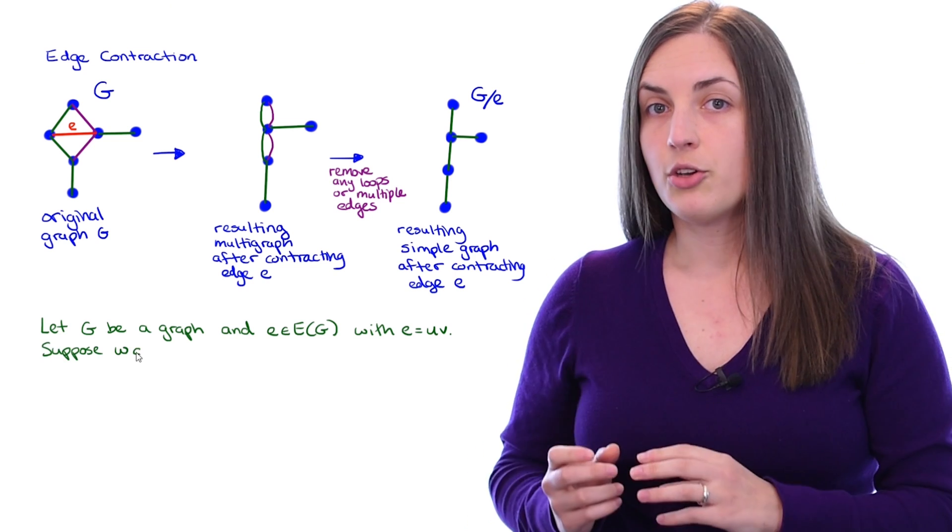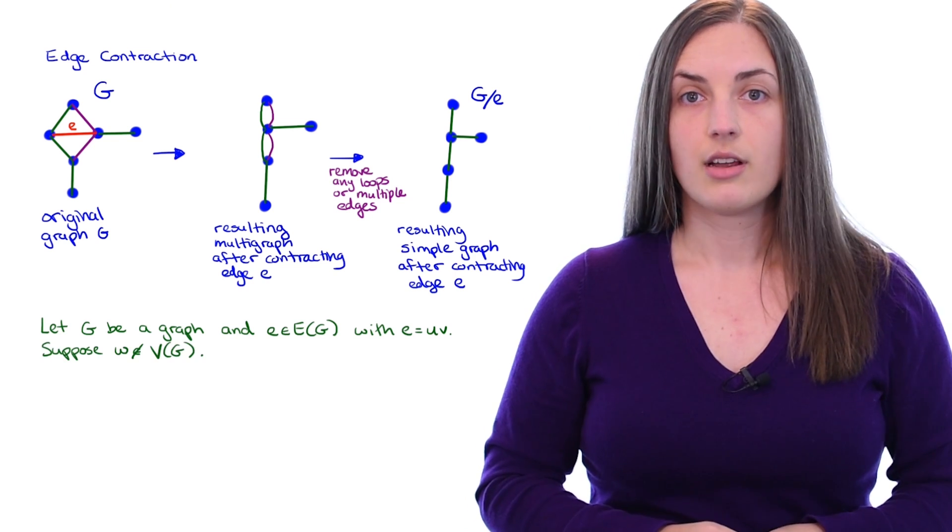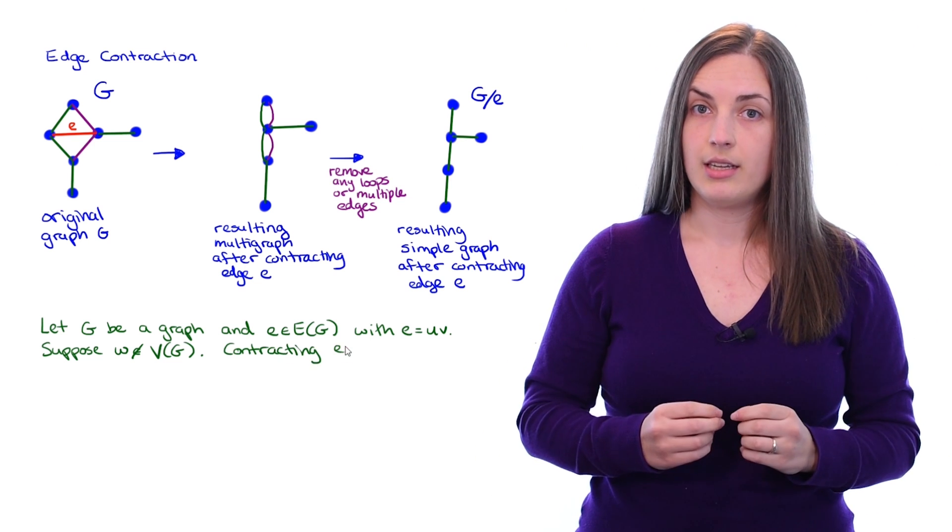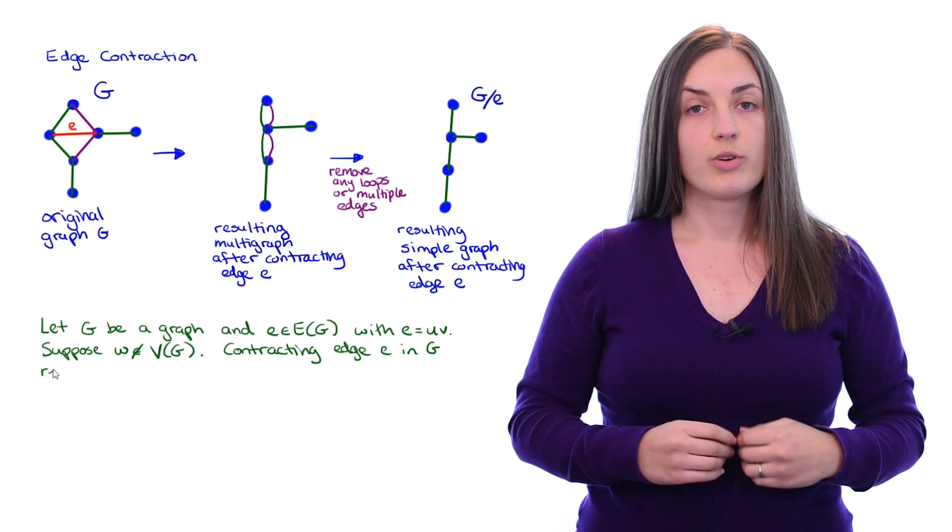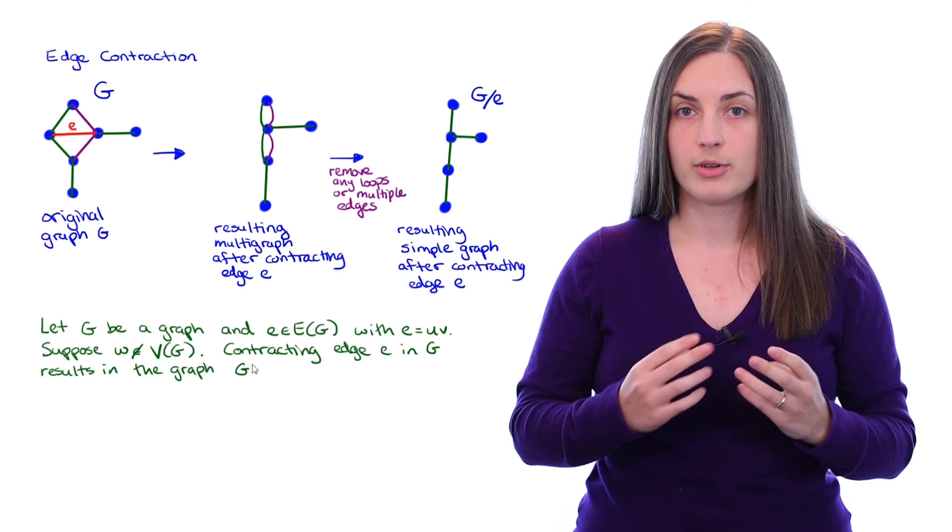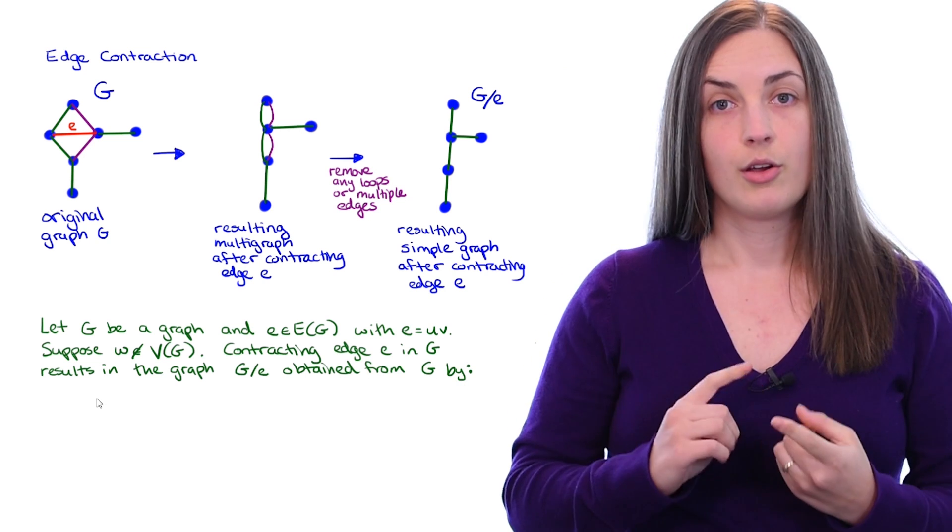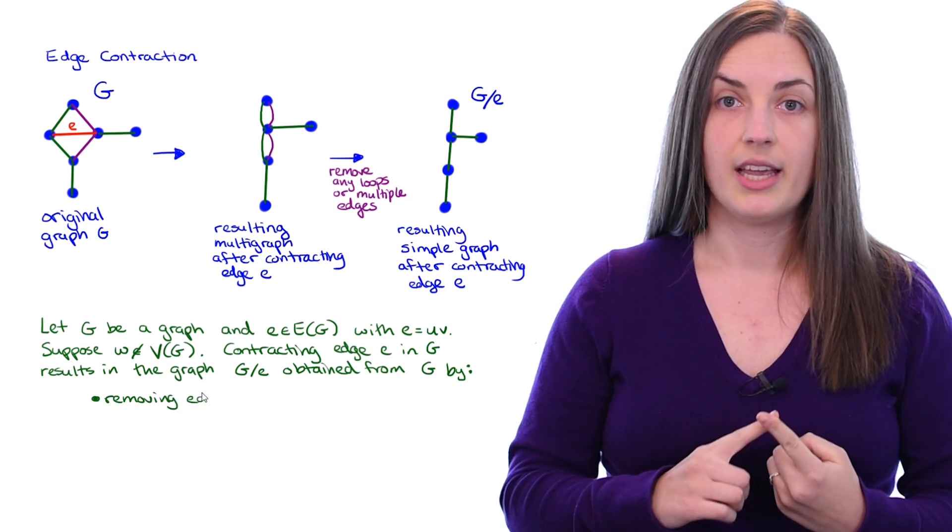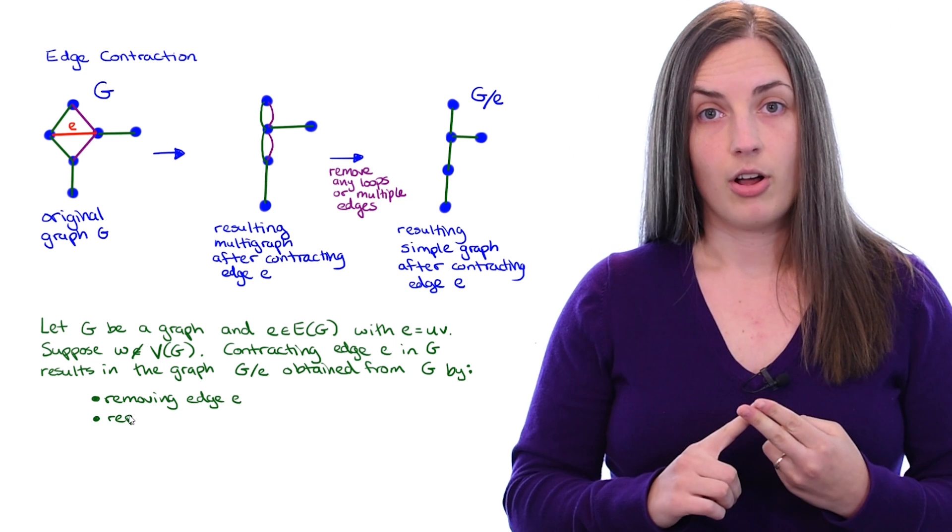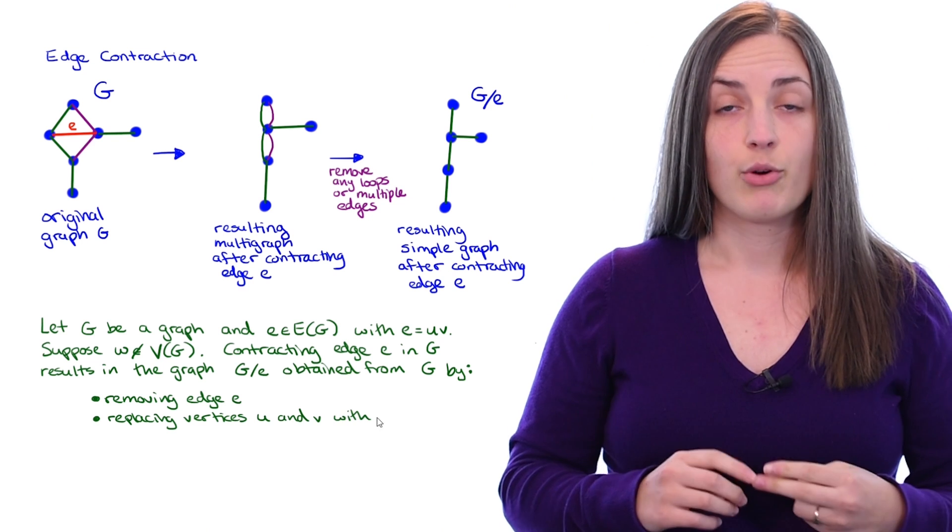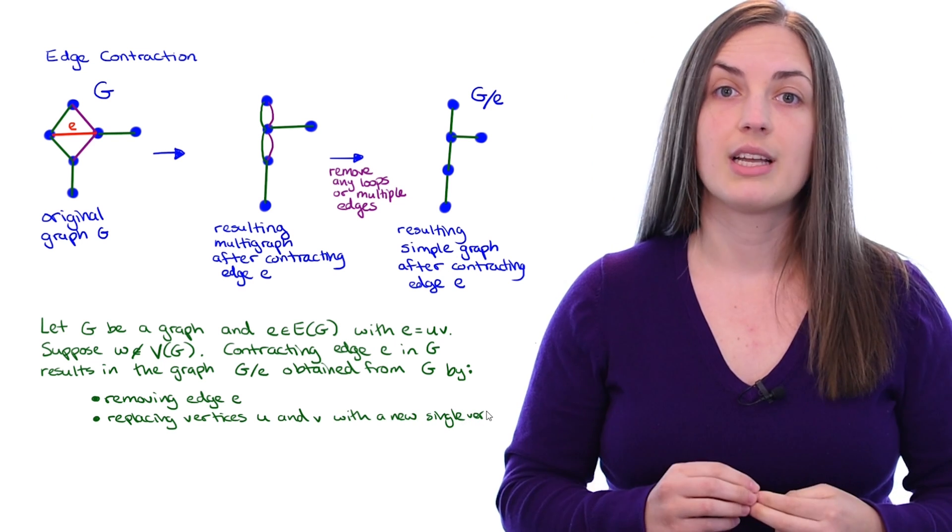Furthermore, suppose that W does not belong to the vertex set of graph G. Contracting edge E in graph G results in a new graph, denoted G forward slash E, which is obtained from G by first removing the edge E, second removing the end vertices u and v and replacing it with a new vertex W.